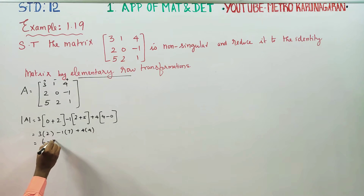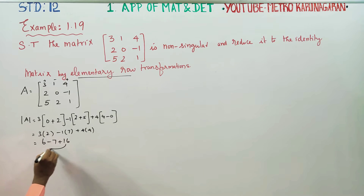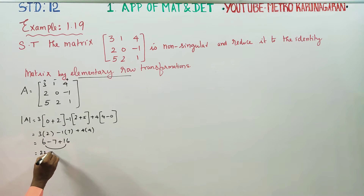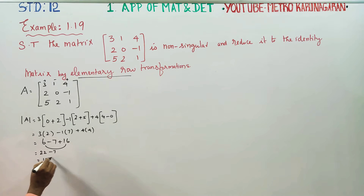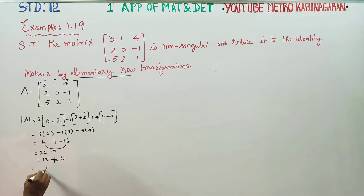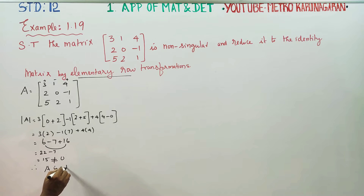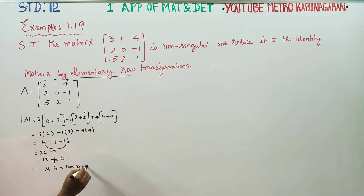So: 3 times (0 plus 2 = 2), minus (5 plus 2 = 7), plus 4 times (4 minus 0 = 4). That gives 3 × 2 is 6, minus 7, plus 16. Adding these together, you will be getting 22 minus 7 = 15, plus 16 — this is not equal to 0.